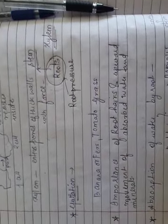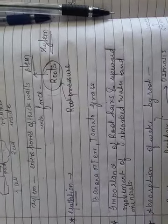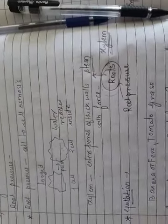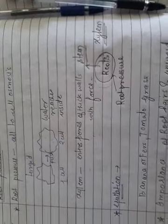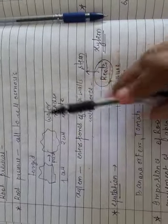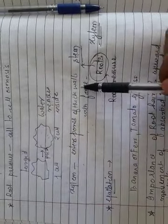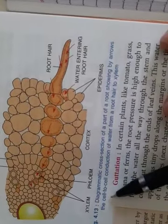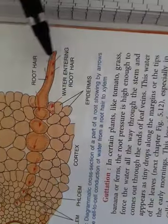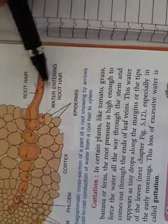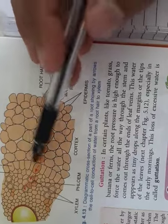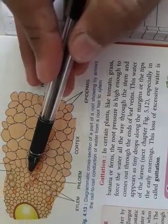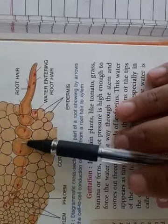We have studied about xylem in detail in grades 7, 8, and 9 — what are xylem vessels. So root pressure is because of cell to cell osmosis; the water reaches inside, there is a flow of water, water enters the xylem, enters the pores of thick walls with force, and finally reaches the stem, leaves, and branches. There is a diagrammatic cross section showing cell to cell conduction of water from a root hair to xylem, passing cell to cell and finally reaching the xylem and the stem.